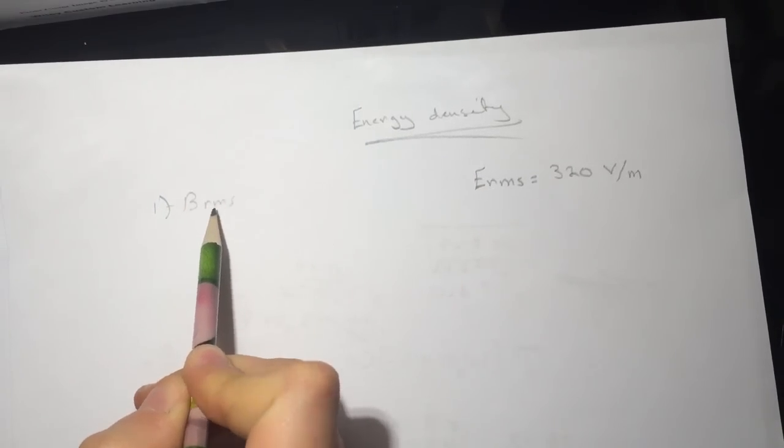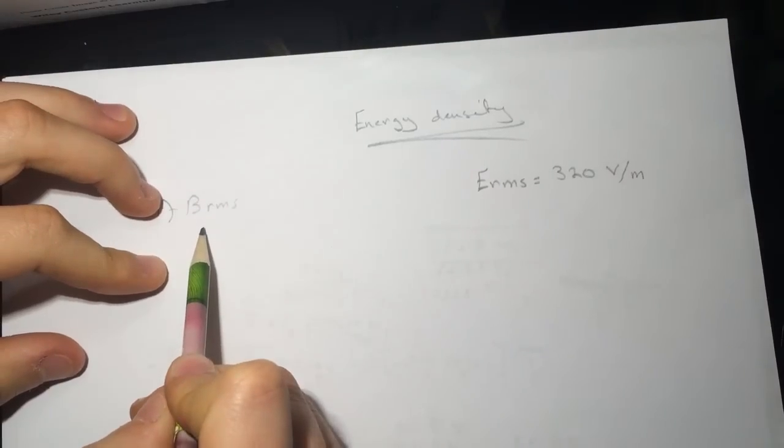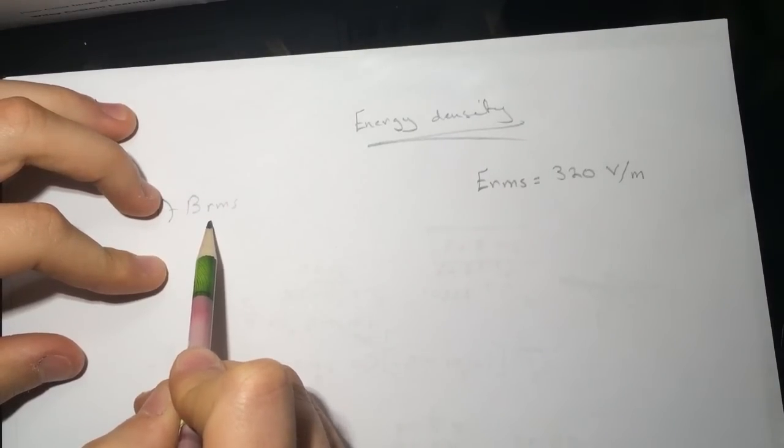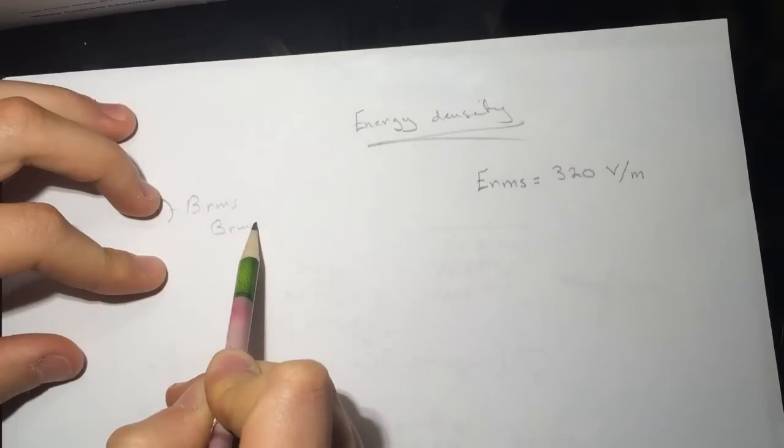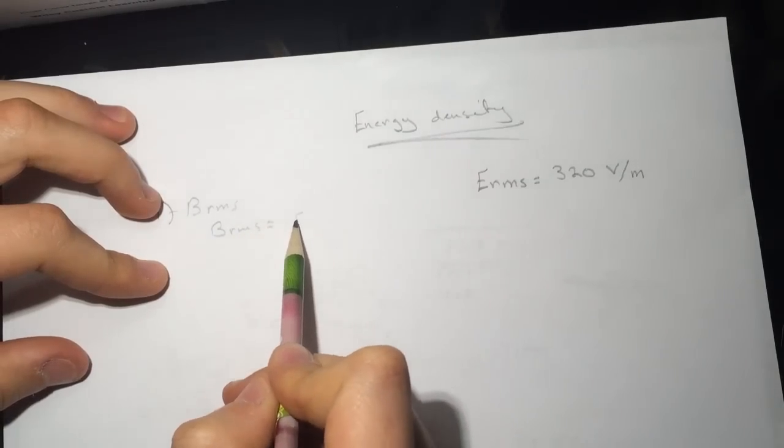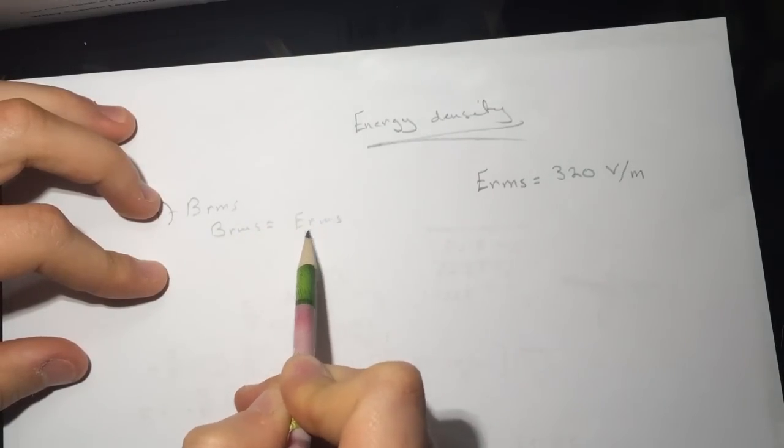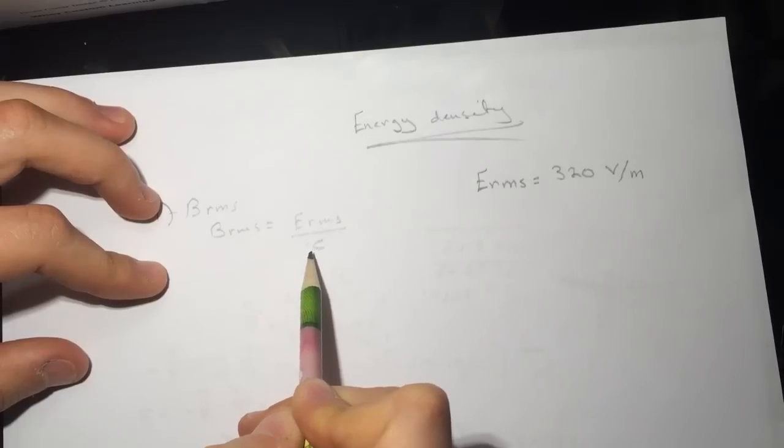The relationship between those is that B_RMS will be equal to E_RMS divided by C. C is the speed of light.